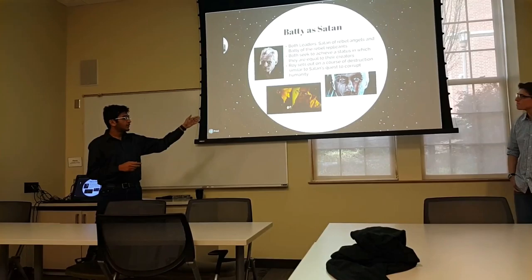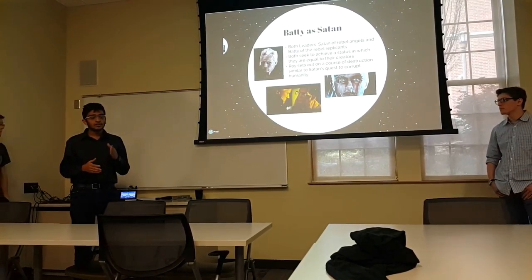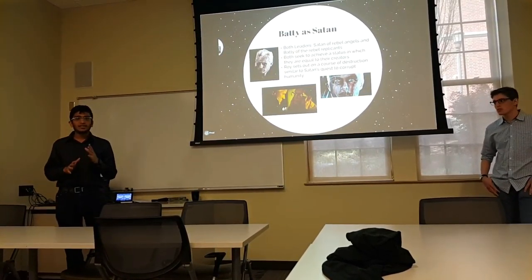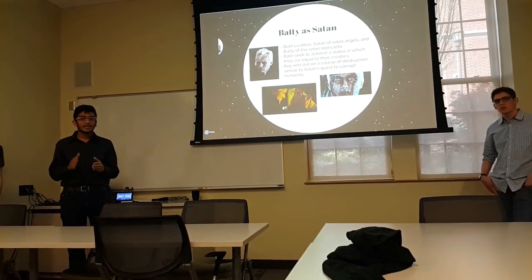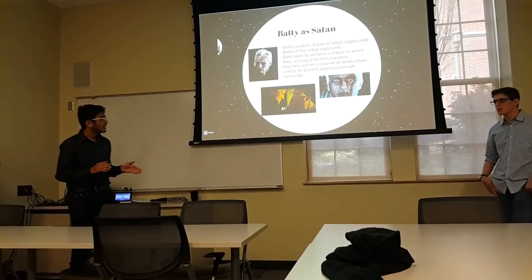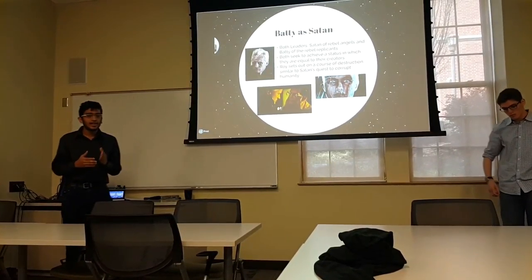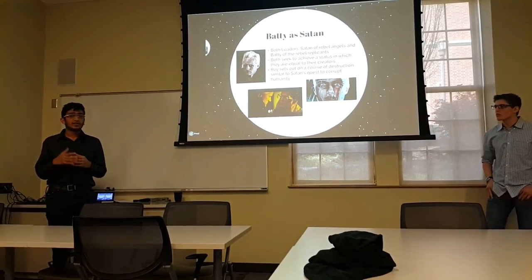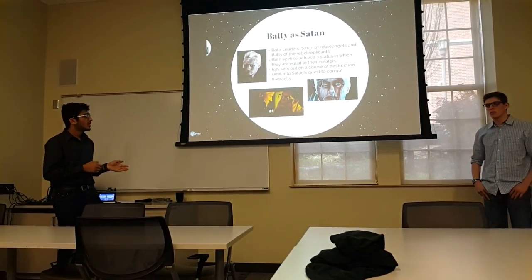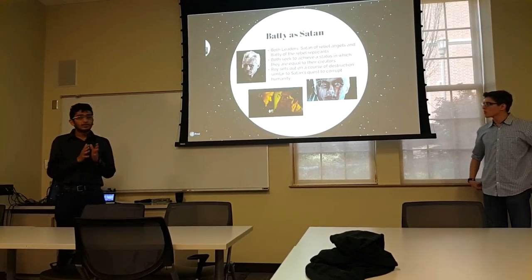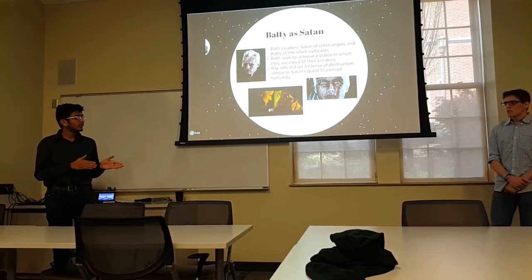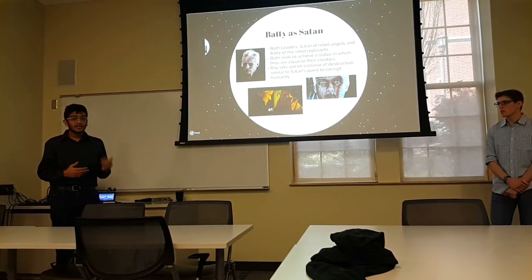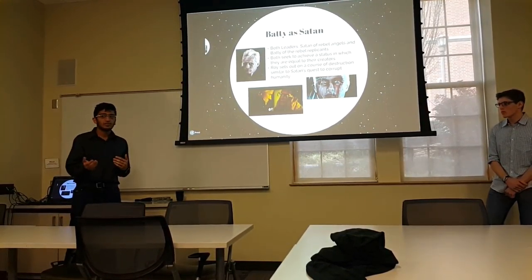In the film, after they return to Earth in order to search for his maker, Roy sets off on a path of destruction — he destroys everything in his path and kills human beings without any remorse. Similarly, Satan turns his eyes to Earth and decides to defeat God by corrupting his unique creation, which is humans. So there is a correlation existing between the two: Satan wants to corrupt humanity, and Roy Batty tries to destroy humans in his quest to find his maker.